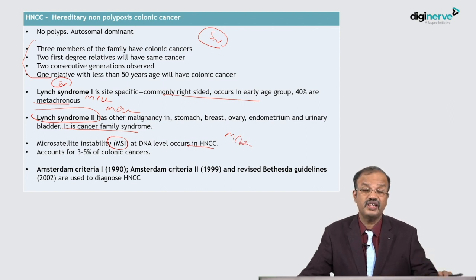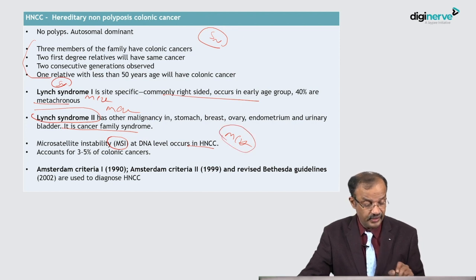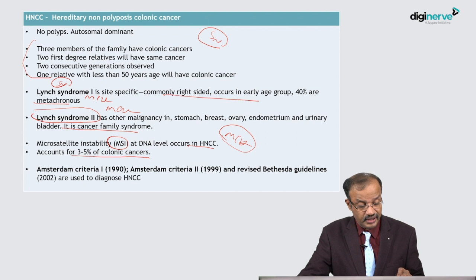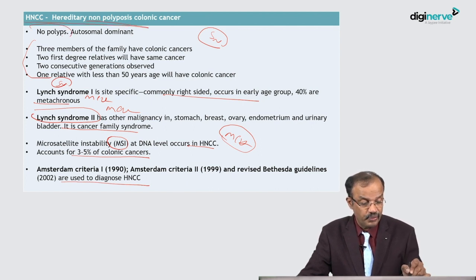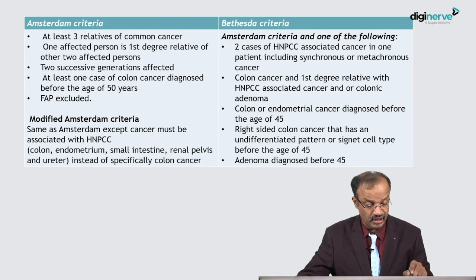Microsatellite instability is a feature of HNPCC — no polyps are involved. HNPCC accounts for three to five percent of colonic cancers. The Amsterdam criteria 1 was established in 1990 and Amsterdam criteria 2 in 1999, with revised guidelines — all are used to diagnose HNPCC. The Amsterdam criteria requires at least three relatives with colonic cancer, one being a first-degree relative, across two successive generations, with at least one case diagnosed before age 50.